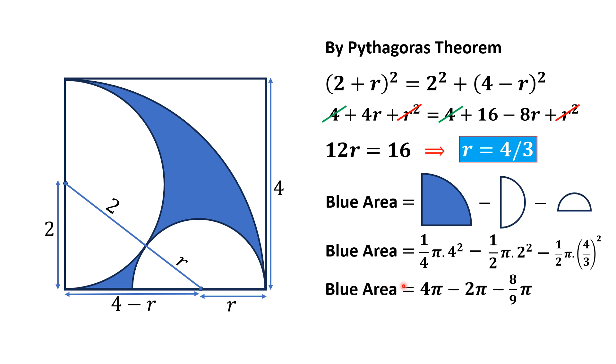So after some simplification we will get blue area equal to 4π minus 2π minus 8/9π, and by simplifying we will get blue area equal to 10/9π. That is the answer.